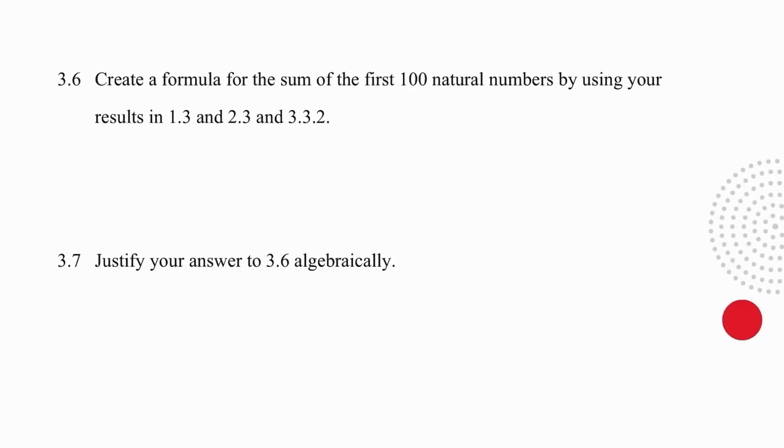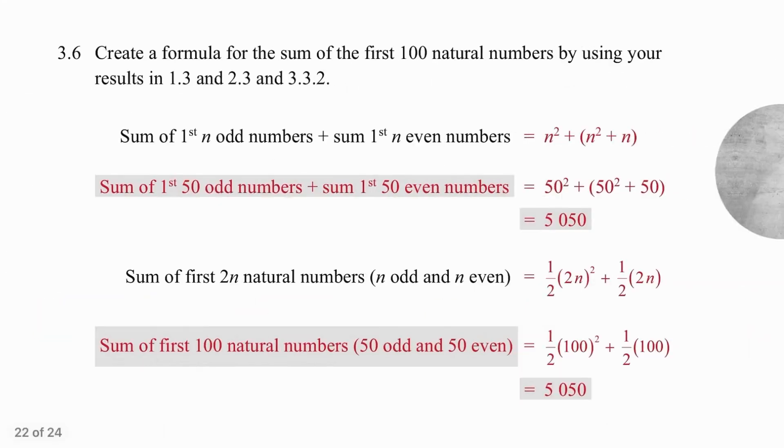Pause the video and try these on your own. How did you do? In question 3.6, to start with, we are going to recall that the formula for odd numbers is n squared. The formula for even numbers, in other words, our rectangular numbers, is n squared plus n.